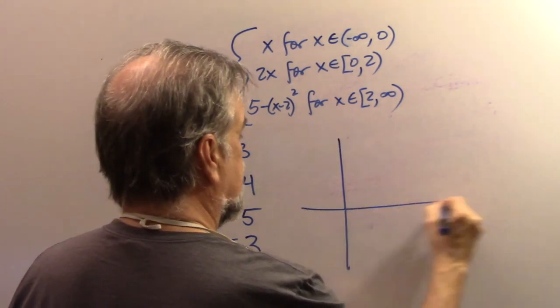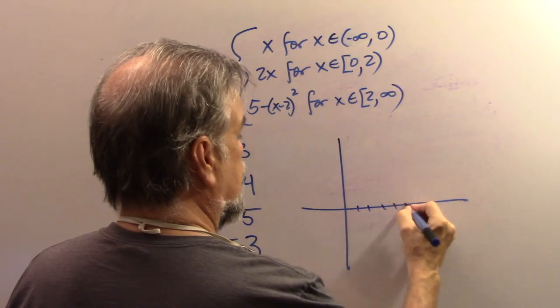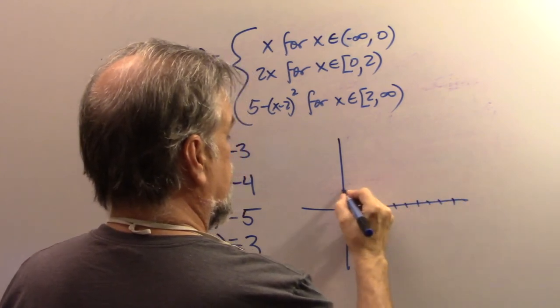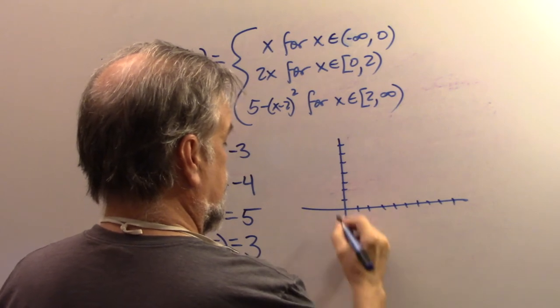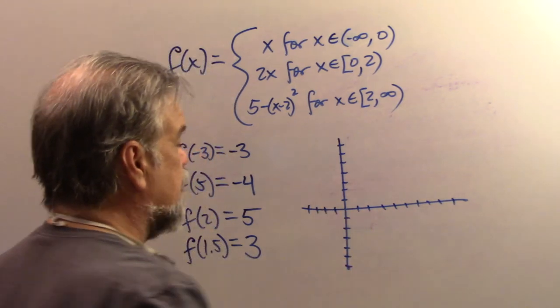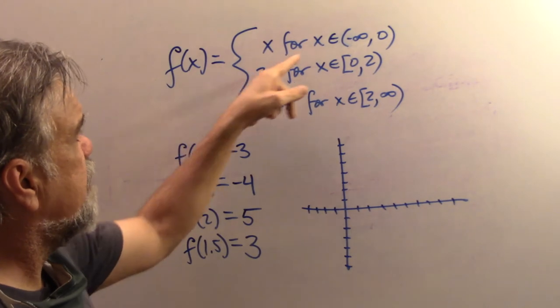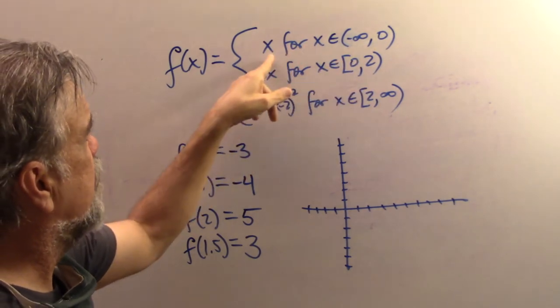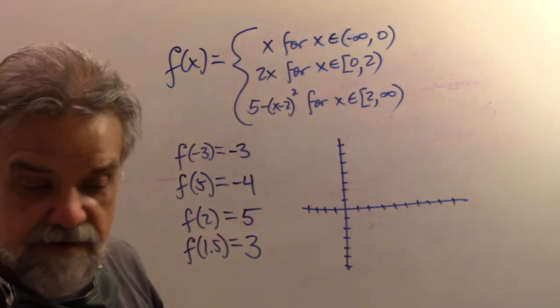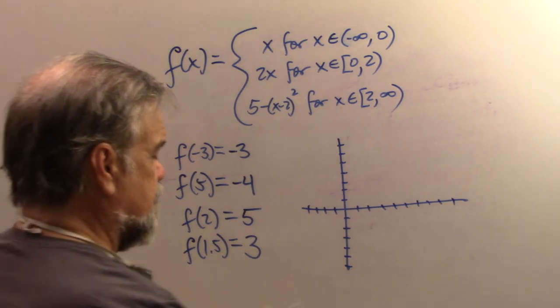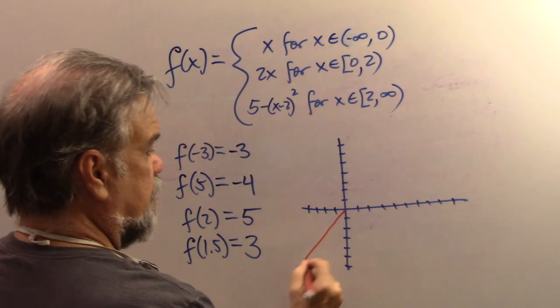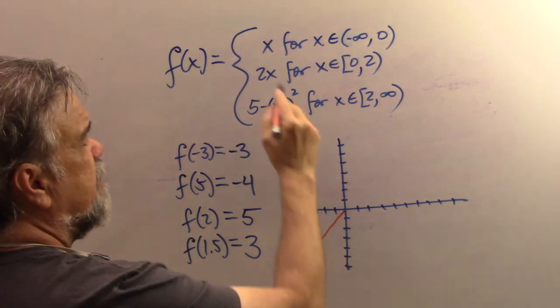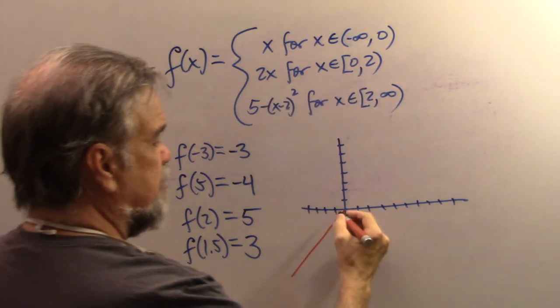Now, what does this look like? So when X is less than zero, F of X is just X. I know what that looks like. That looks like this. Coming up here.